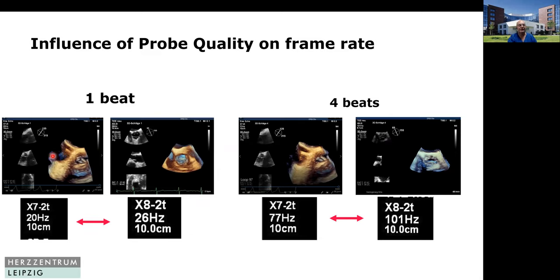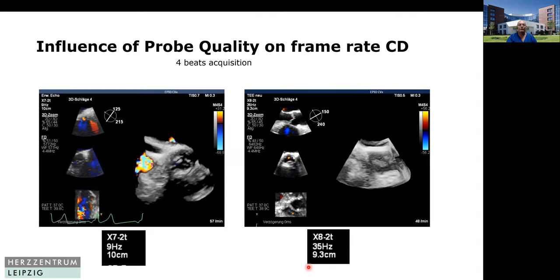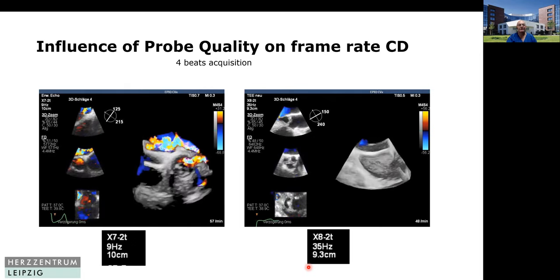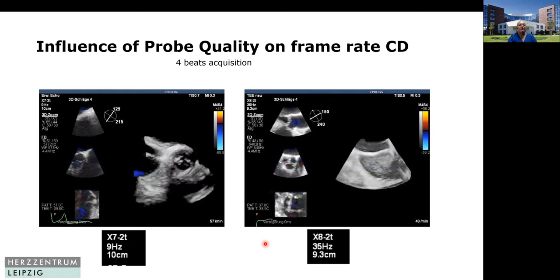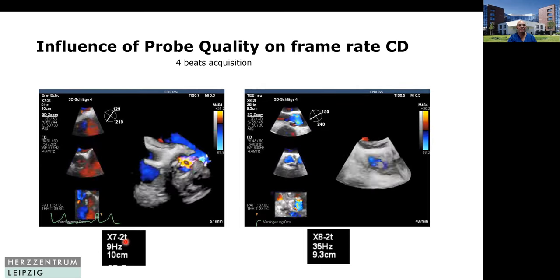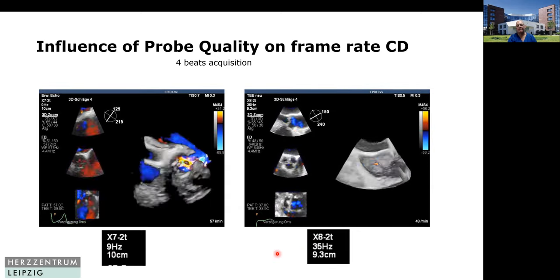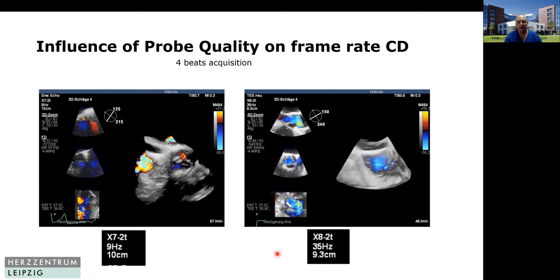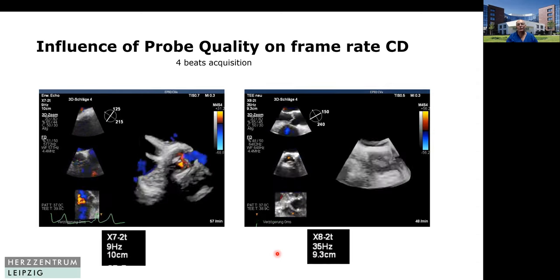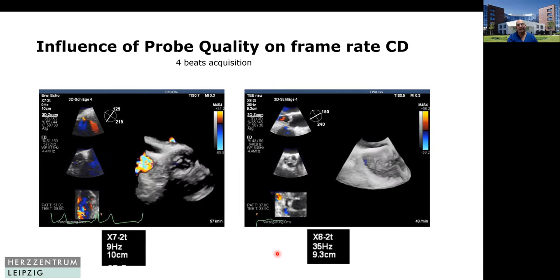So comparing the X7 and X8: one-beat acquisition gives 20 to 26 Hz, four-beat gives 77 Hz. I think it's worth investing more money in the newer probe. If you apply color Doppler it's even worse — with four-beat acquisition using the X7 probe you have 9 Hz, while with the X8 probe you end up with 35 Hz. 35 Hz is a good temporal resolution where you hardly miss any jet.